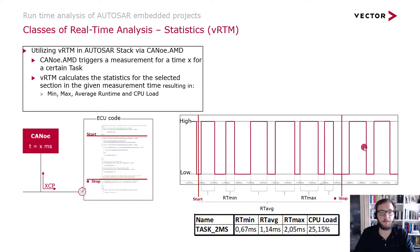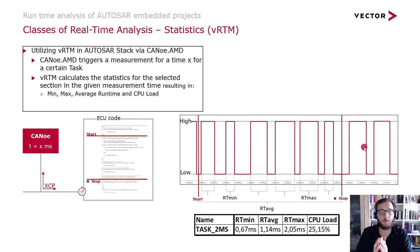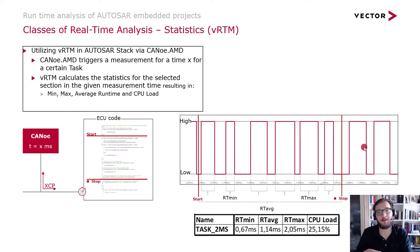Talking about statistics, what we are using in this example are two products that you get from Vector. One is CANoe AMD, which many of you might already know, and CANoe AMD is used in this statistics approach to start measurements via XCP directly on your ECU.